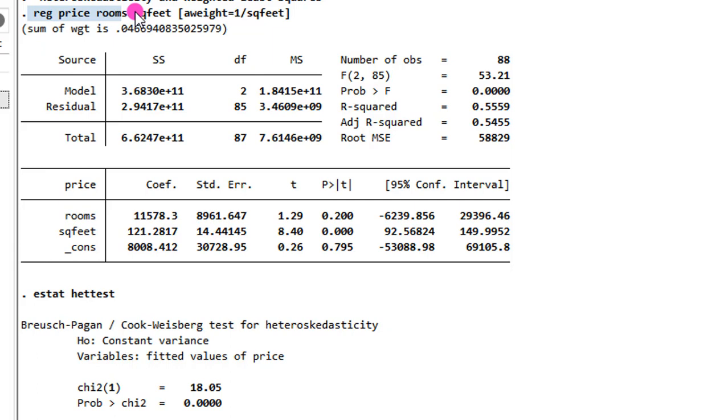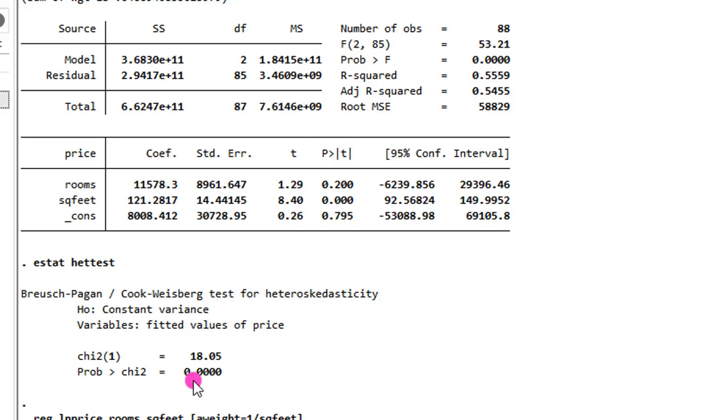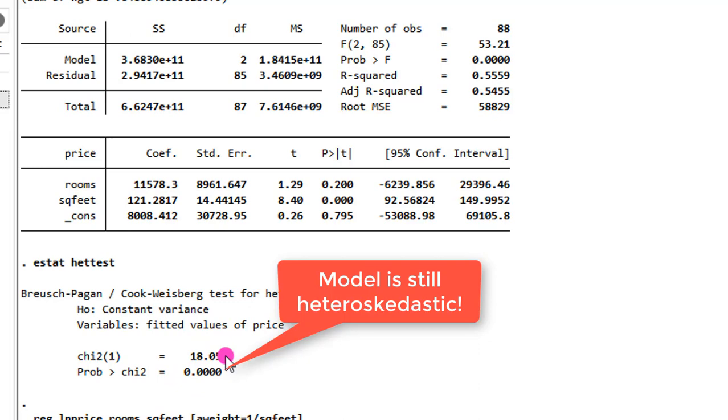And we can see that typical of level level models, even despite using the weights, the model is still heteroskedastic. So this confirms what I said initially, that level level models are always or more often than not heteroskedastic.